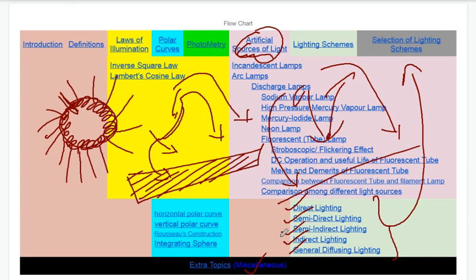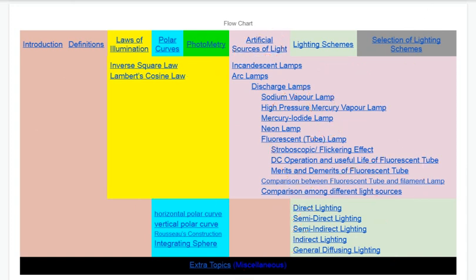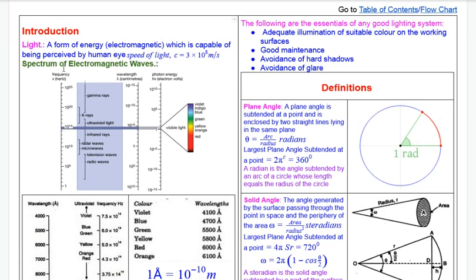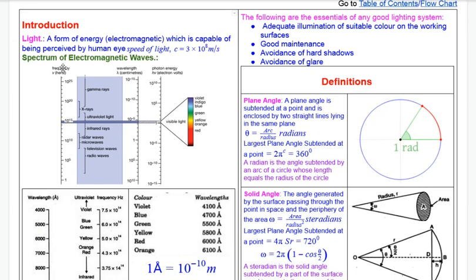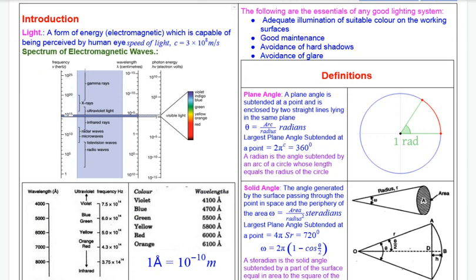In this video, we will talk about the introduction of illumination engineering. We will talk about illumination engineering. First, why is light? We will define light. Light is nothing but a form of energy — specifically, electromagnetic energy.